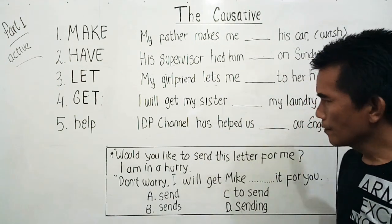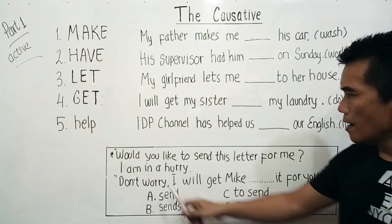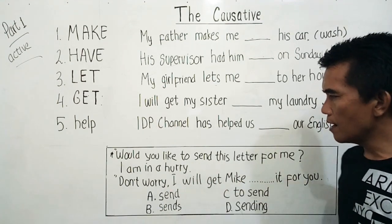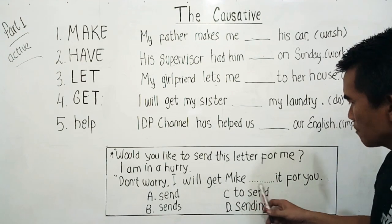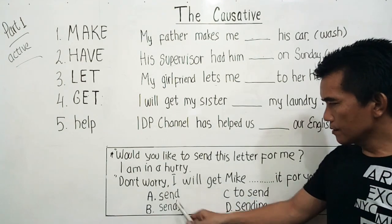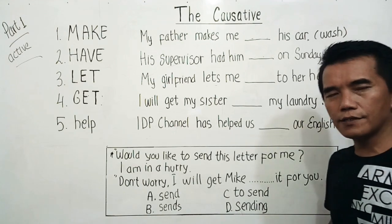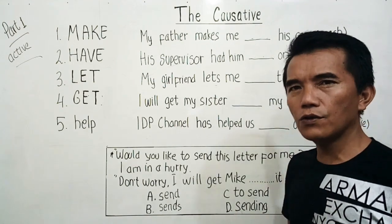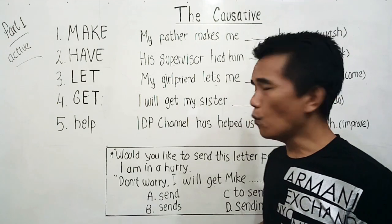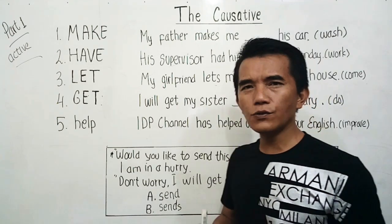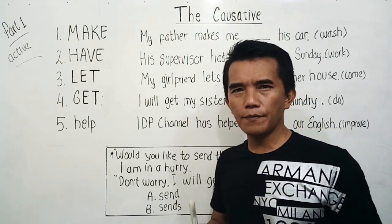Here I give you an example question: 'Would you like to send this letter for me? I am in a hurry.' 'Don't worry, I will get my brain break it for you.' Send, to send, sending — what is the right answer? Later on you will know it. And what about how to construct them and what is the difference in meaning among them?